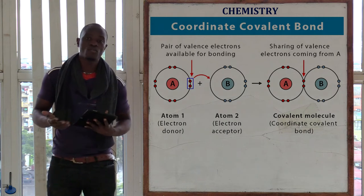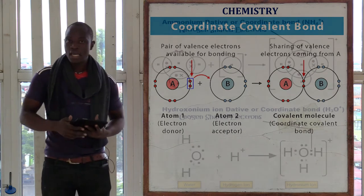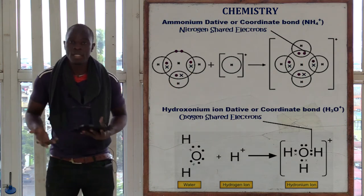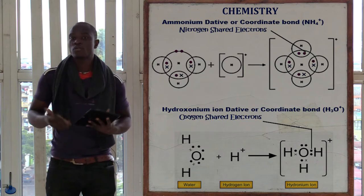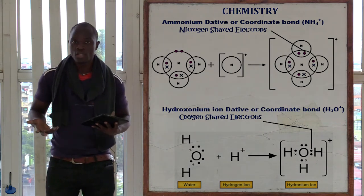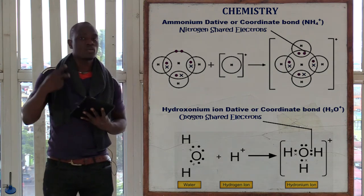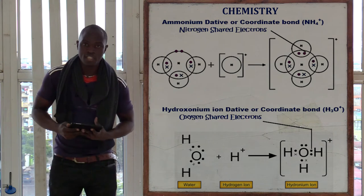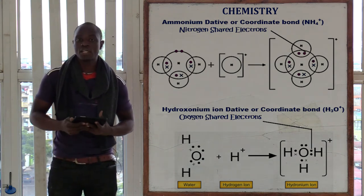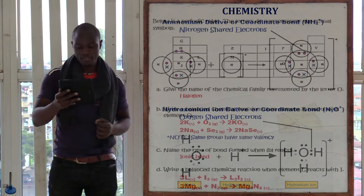A coordinate bond (or dative bond) is formed when one atom donates two electrons to be shared. Examples include the ammonium molecule, hydroxonium ion, and ozone (O3). This was covered in a previous class — please check those videos on the different types of bonds.